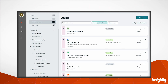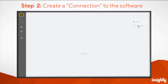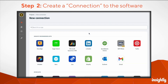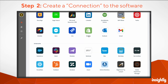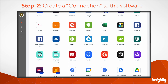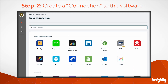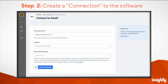Once you're inside AppConnect, the first thing you'll want to do is create a connection to whichever software you'd like to build an automation with. For example, if you want to build an automation with your Gmail account, you'd select the Gmail connection and sign into your account.